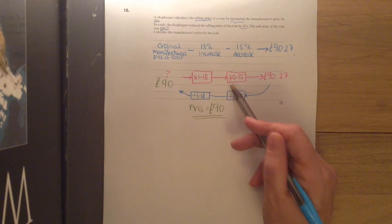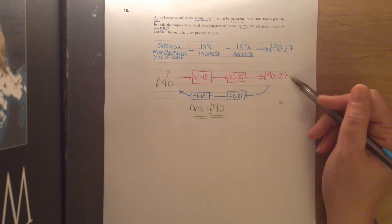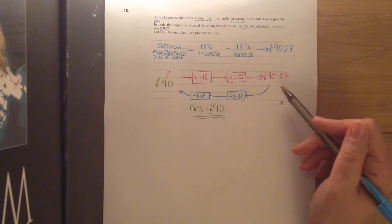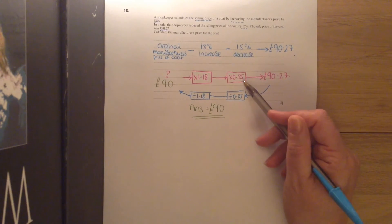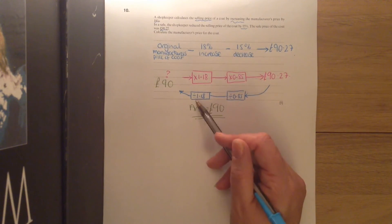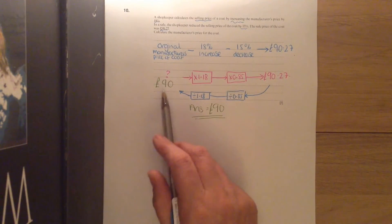So we times by 0.85—100 take away 15 obviously—and that gave us our answer. So to work back to the original cost, instead of multiplying by 0.85 we're going to divide by it, and then we're going to divide by 1.18.